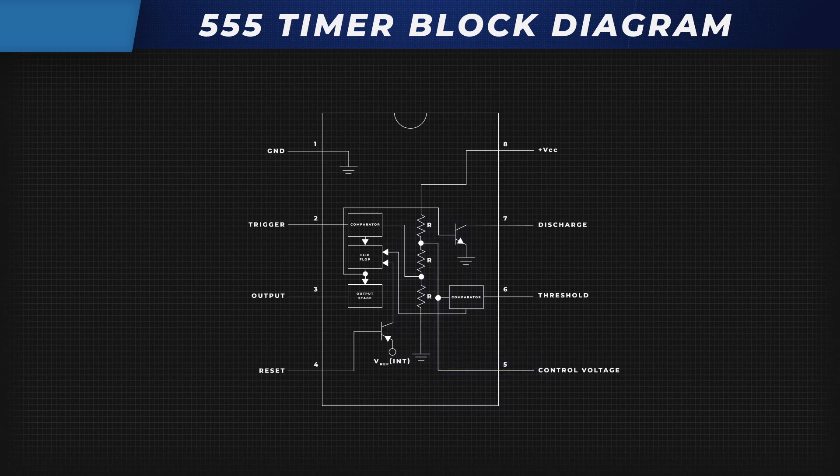Moving down, there are two comparators. One is called a threshold comparator. Its negative input is connected to the voltage divider's higher reference voltage and its positive input is connected to the threshold pin. The second one is the trigger comparator. Its negative input is connected to the trigger pin and positive to a low reference voltage.